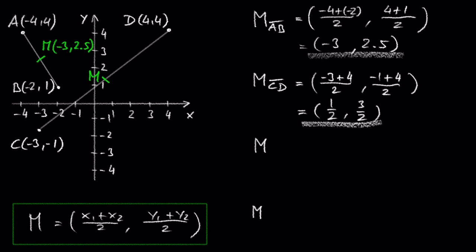Let's find the midpoint of point E, negative 1, comma negative 4 and point F, 2, comma 1.